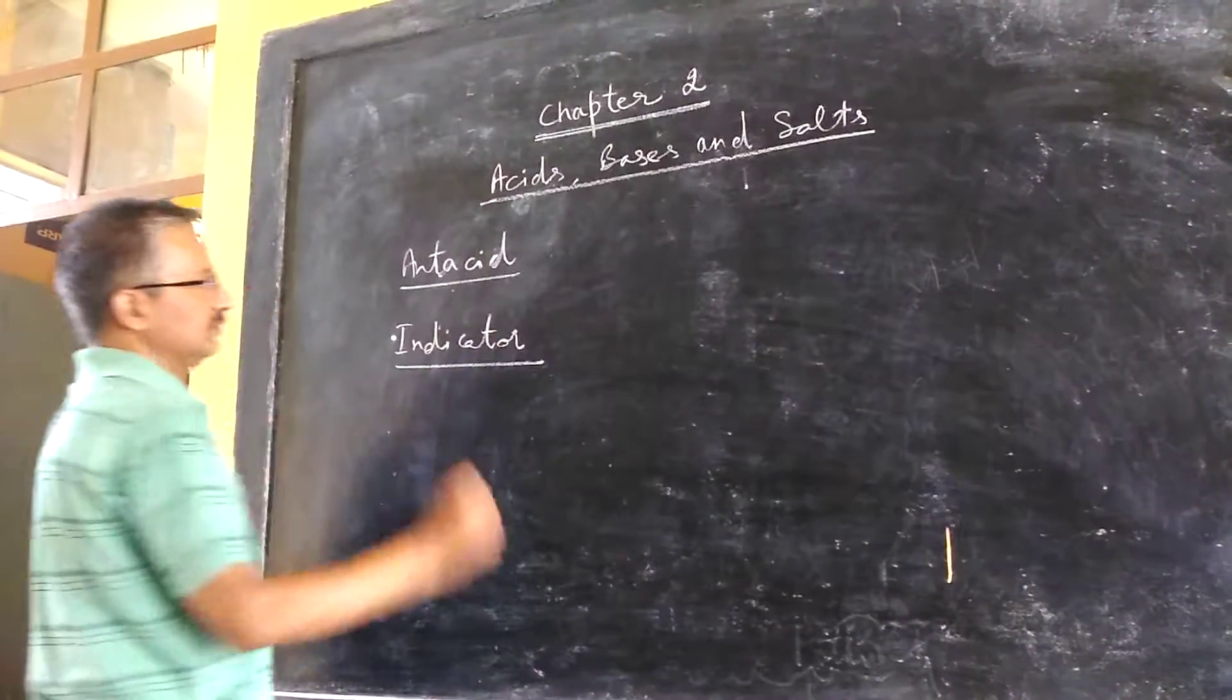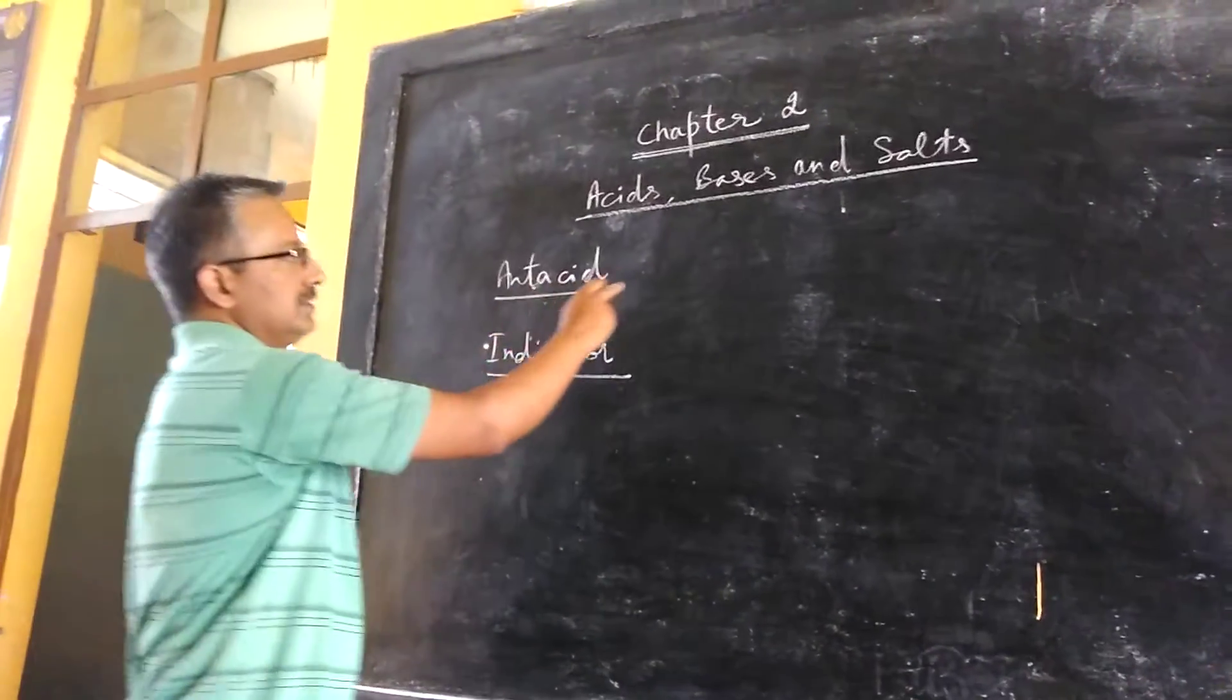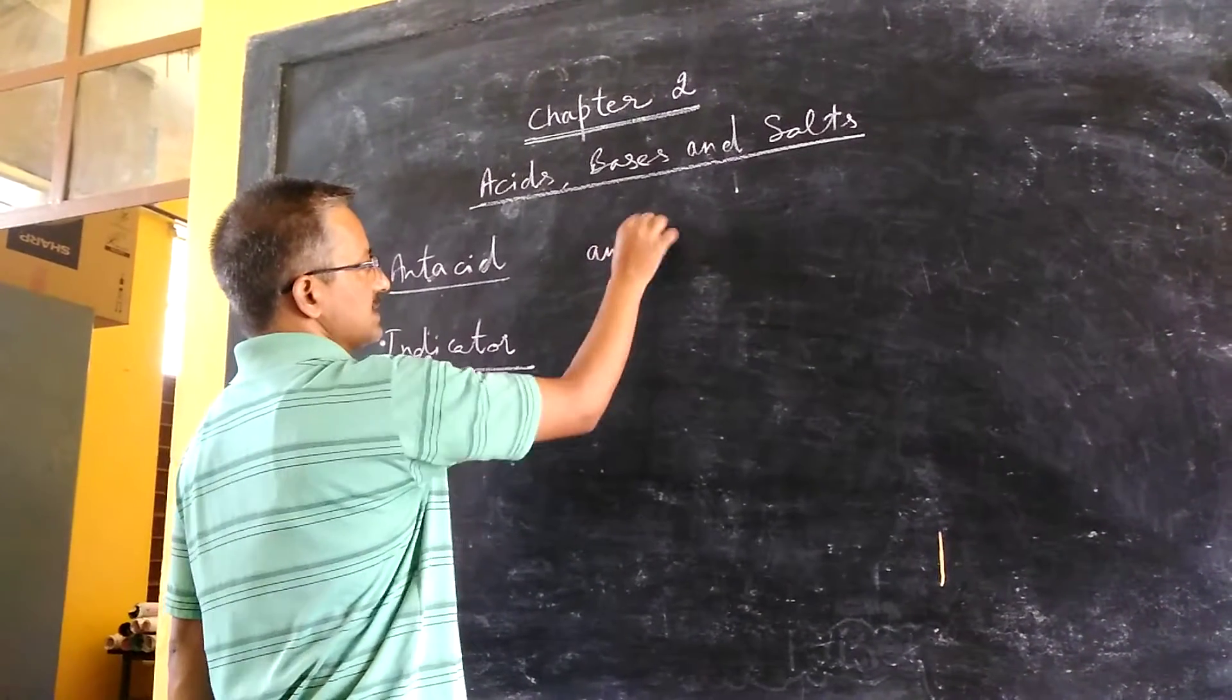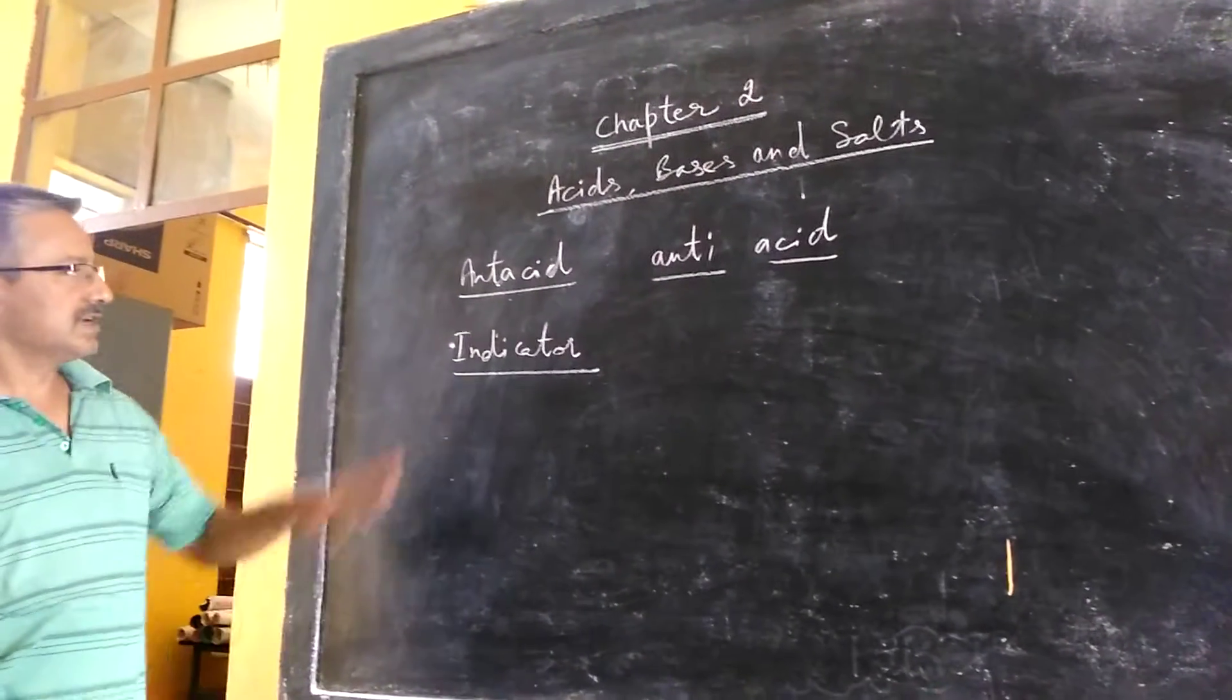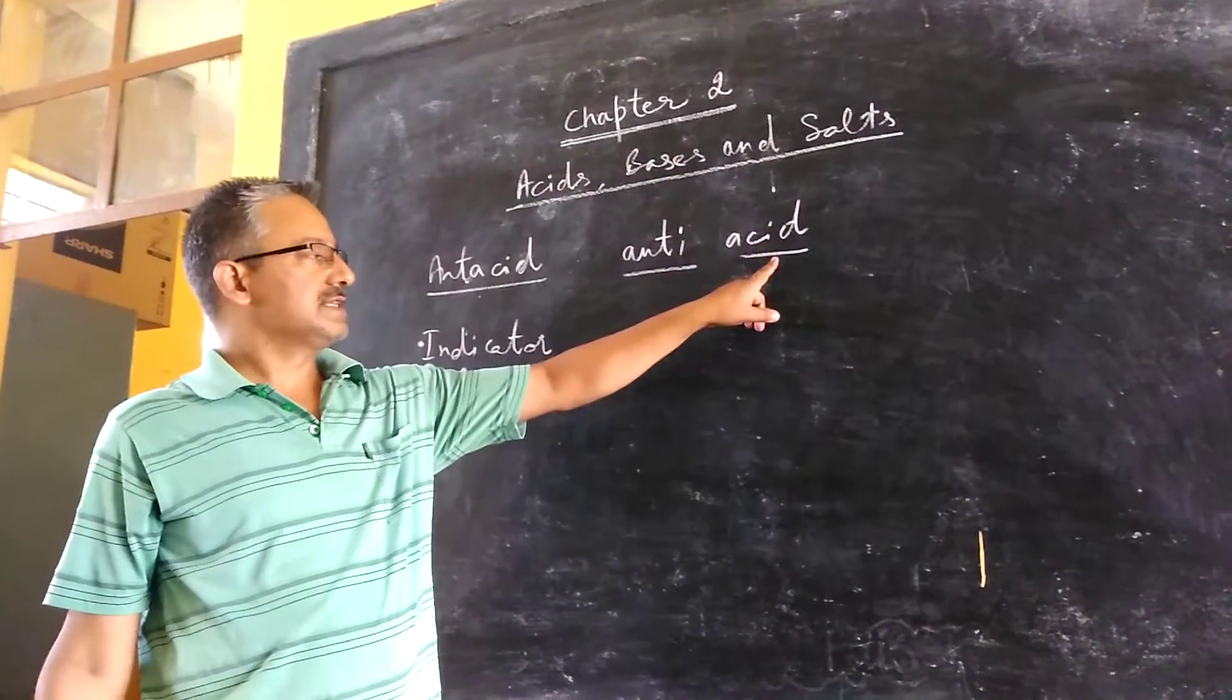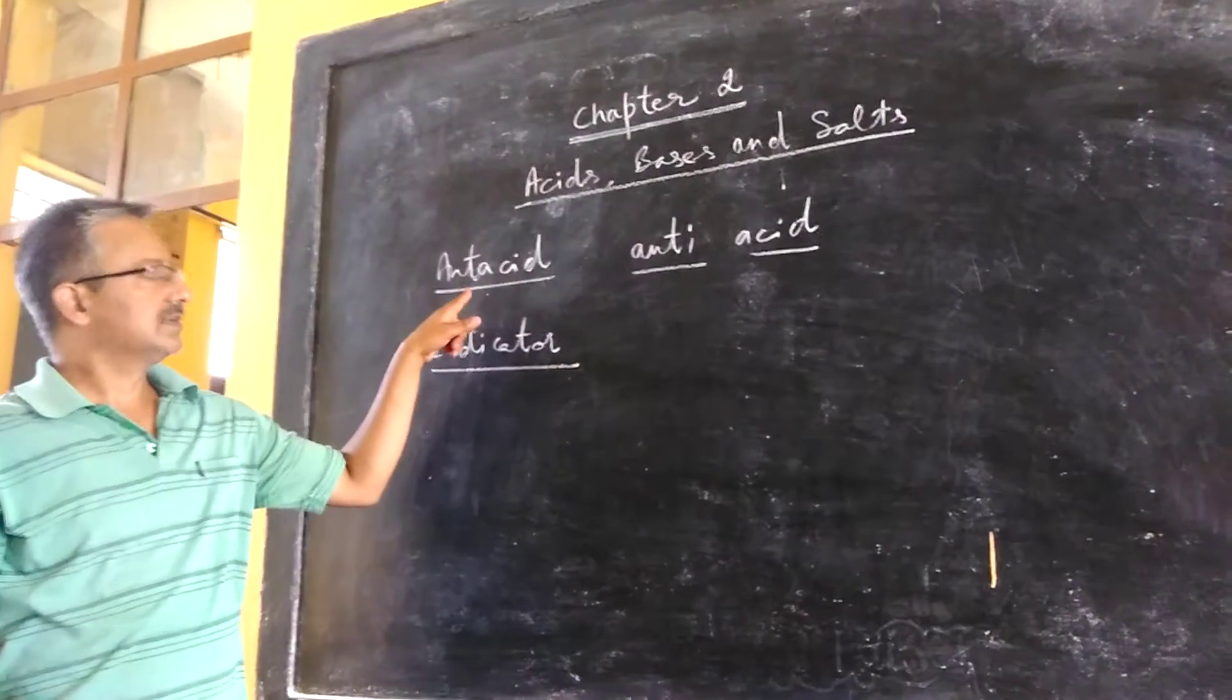One thing is antacid and the other thing is indicator. So let us discuss these two things. Antacid is made up of two words: anti-acid. So a substance which can act against acid, against the effect of acid, that is termed as antacid.